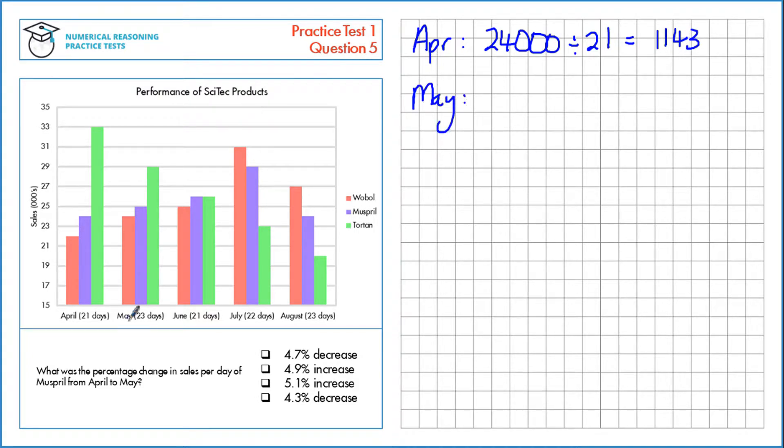For May, for Muspril, we're looking at the blue bar here, which is 25,000, divided by 23 days, which is 1,089.